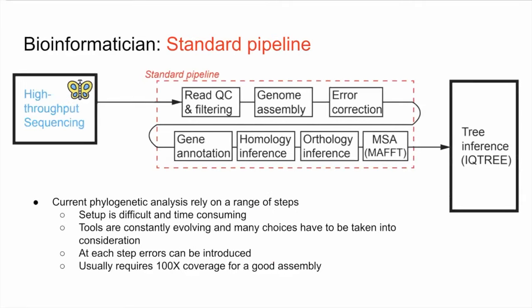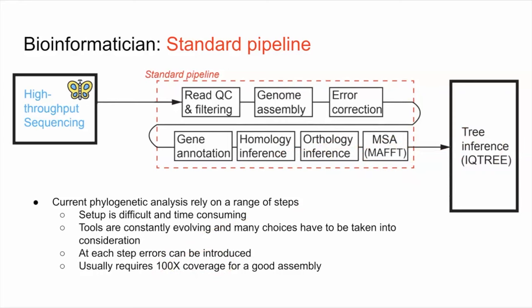In the past — and still today — what bioinformaticians would do is resort to high-throughput sequencing. They would take the species, generate what we call reads, which are DNA fragments with ACGT letters. Then you would follow a standard pipeline: read filtering, genome assembly, error correction, annotation, then infer homology to other species, then orthology, and finally do an alignment of the genes. With this alignment, you could infer a tree. This is quite a big, time-consuming process that requires many different tools, introduces errors at each step, and typically requires around 100x coverage for a good assembly.